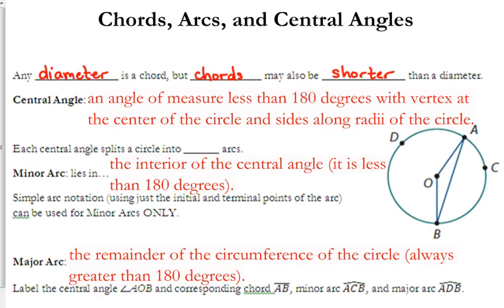Now what we're going to focus on today is an angle of measure less than 180 degrees. The central angles are always going to be less than 180 degrees. This is the key, the vertex is at the center of the circle. The vertex has to be at the center of the circle.